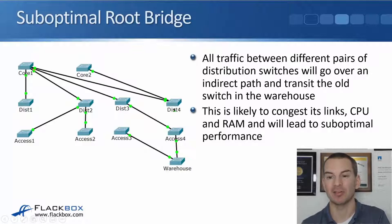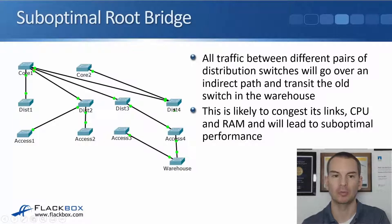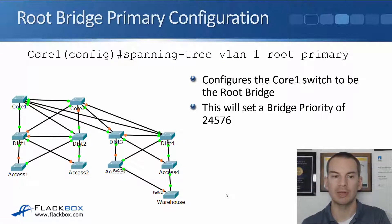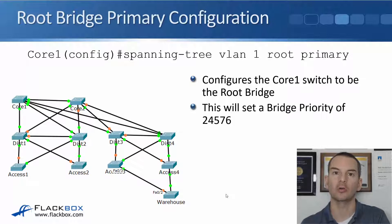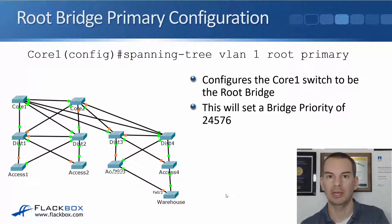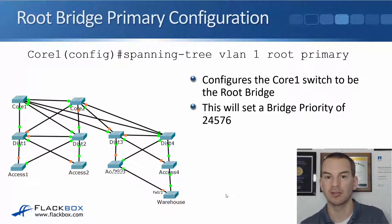All traffic between different pairs of distribution switches will go over an indirect path and transit that old switch in the warehouse. That's likely to congest its links, overwhelm its CPU and RAM, and of course lead to suboptimal performance. So what we should have done was configure the root bridge to be sitting on one of our core switches so that all traffic is going to go through that path instead. The way that you set this is at global config on the switch that you want to be the root bridge: spanning tree VLAN 1 root primary.